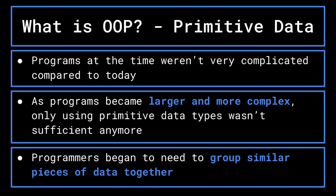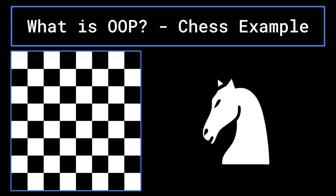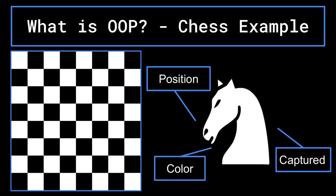Programmers began to want to group variables of similar type together. To serve as an example, let's imagine you are trying to program a chess game. When programming a knight into the game, there are plenty of variables that you will need in order for the piece to work how it should. For example, you would need a position variable to keep track of where the knight is. Additionally, you would need a Boolean to represent whether the piece has been captured or not, because if it has, you would not want it to show up, nor should you be able to move with it. You may also need a variable to represent which color the knight is, so that the game can treat it correctly.